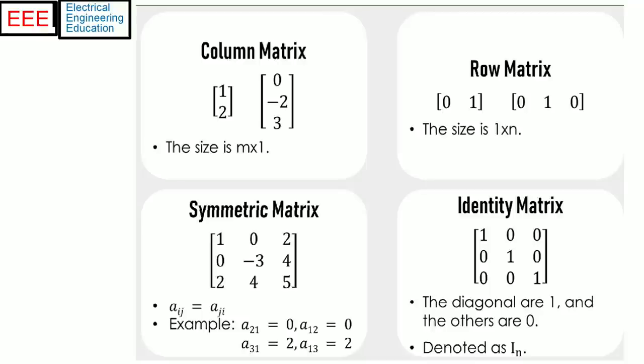An m by n matrix is an array of numbers, real or complex, or functions having m rows and n columns. If m is equal to n, that is, if the number of rows and the number of columns are equal, we have a square matrix.